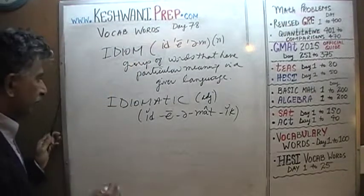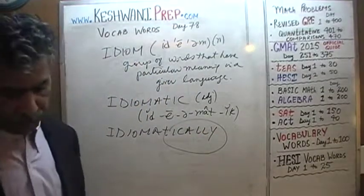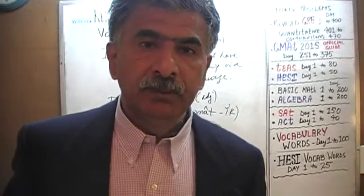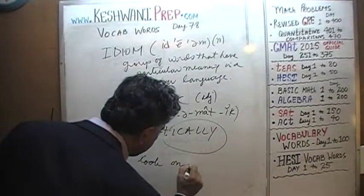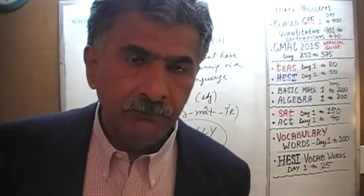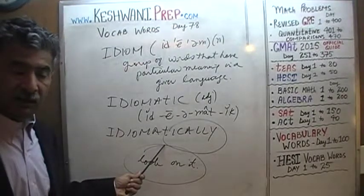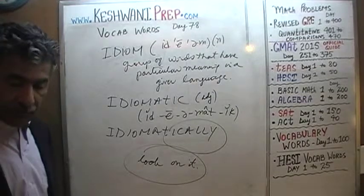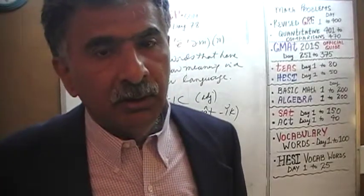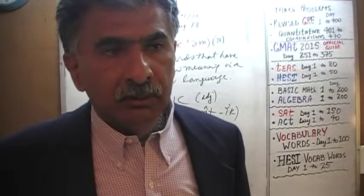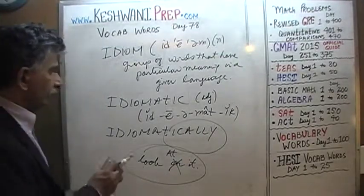The adverb would be idiomatically. For example, if I tell you 'I would like to look on it' — that's not idiomatically correct. It is not idiomatically correct; it's a wrong idiom. We do not say 'look on' something, we say 'look at' something. I was looking at the picture, not looking on the picture. It's an idiom — that's what it is.